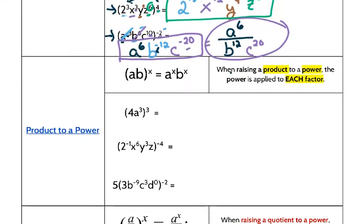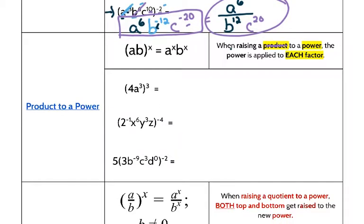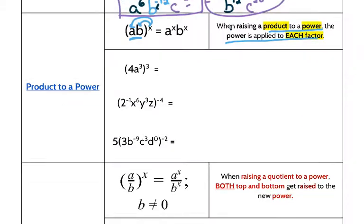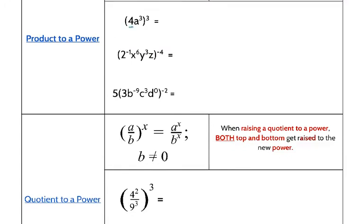Similar but not the same is the product to a power rule: when you have a product inside parentheses, that exponent needs to be multiplied by each element inside — the power is applied to each factor. For the first example, my base of 4: I know there's an exponent of 1, multiply by the outside exponent of 3 to get 4 to the 3rd. A is my base, exponent of 3 multiplied by the outside 3 gives 9. Done.